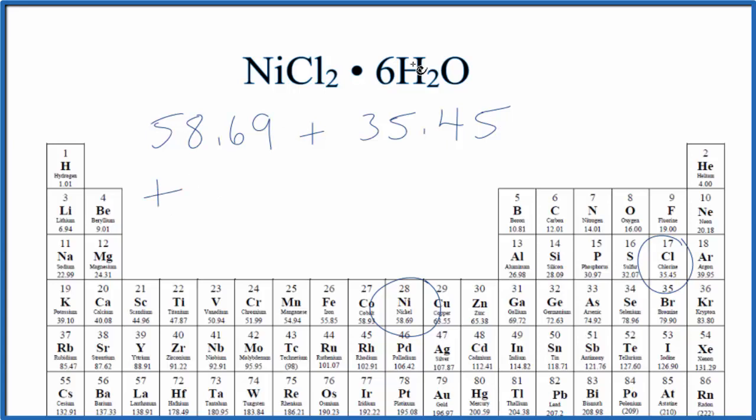And then we'll add to that these six water molecules. We have six separate water molecules around the NiCl2. So we multiply six, let's use brackets, hydrogen 1.01. We have two hydrogen atoms, so we'll multiply this by 2, plus oxygen right here, 16.00. The units are grams per mole.